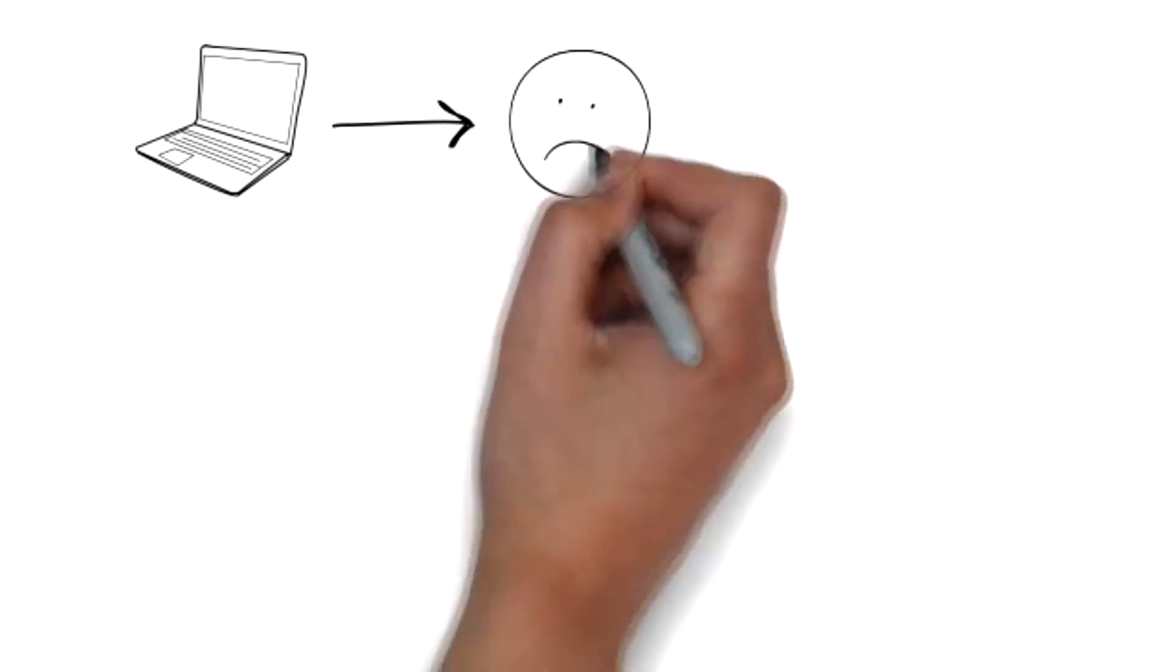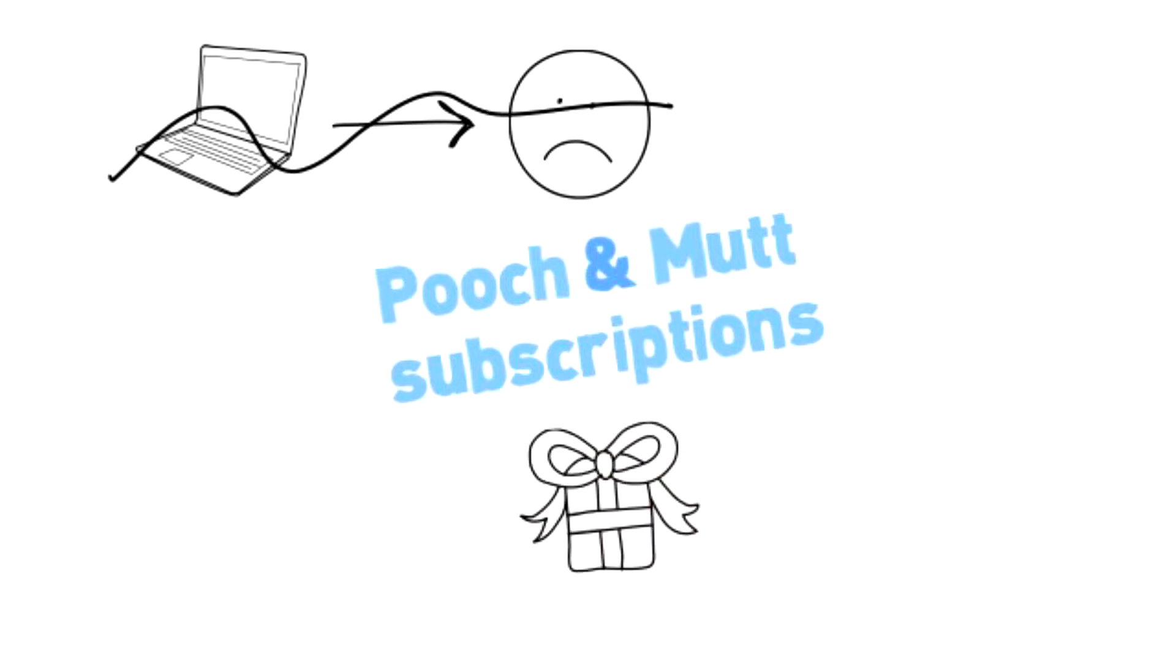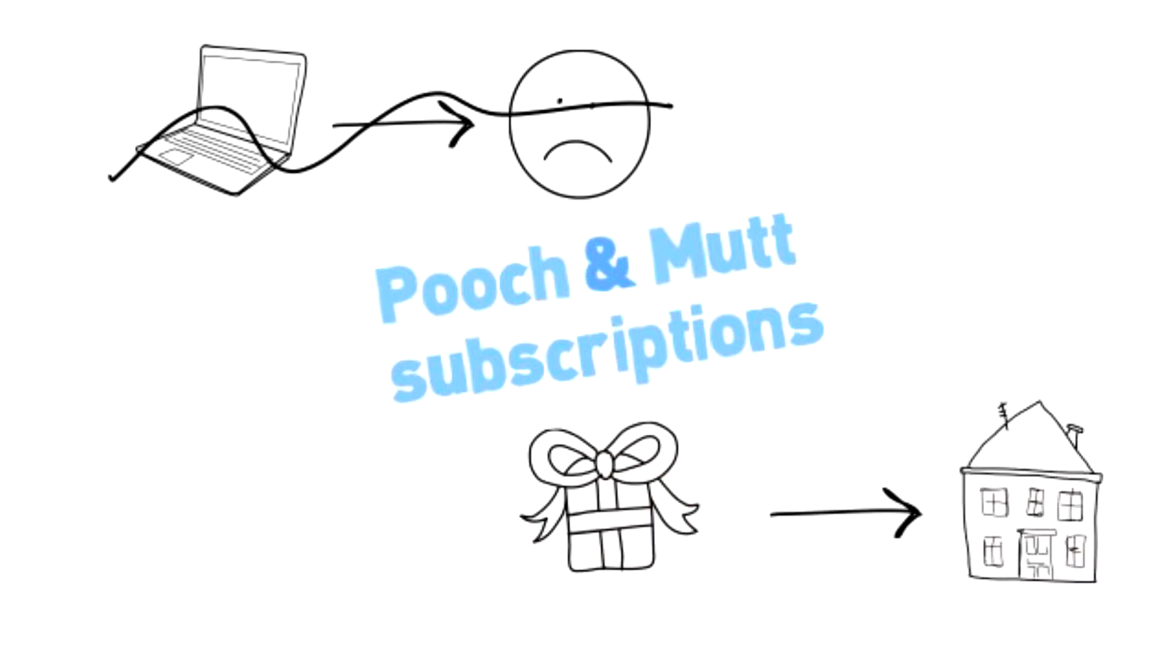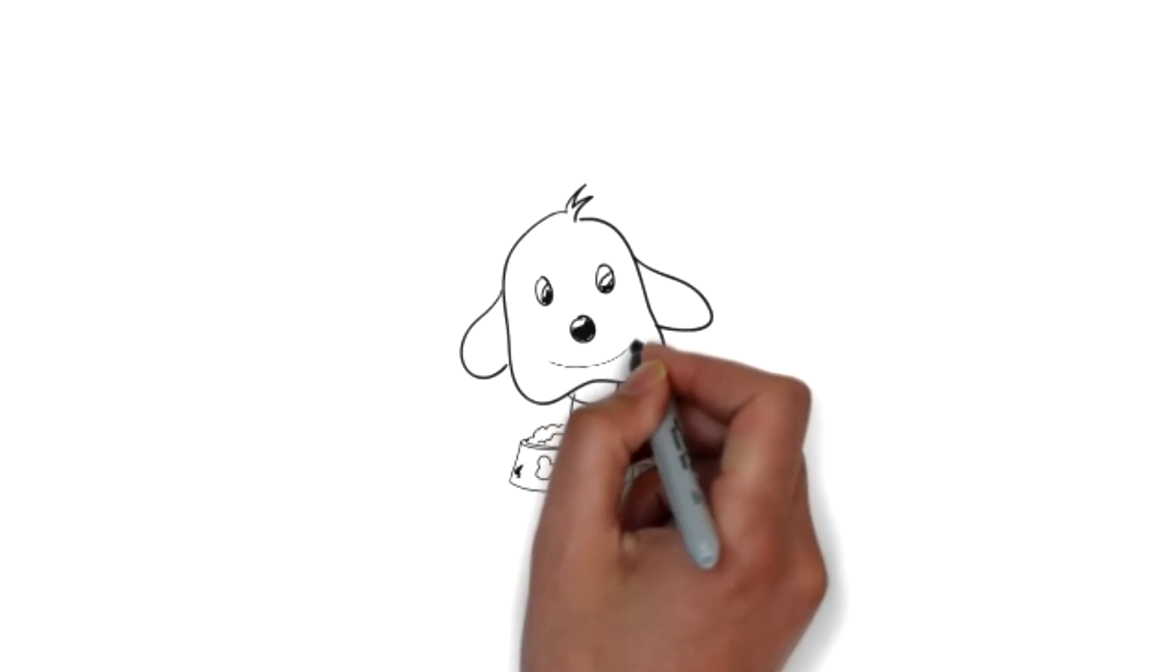Instead of going online every month or remembering to place your order and risk running out, you can set up a subscription. Before you run out, you'll receive your regular order straight to your house, so your dog never has to miss out on getting his Pooch & Mutt added to his food.